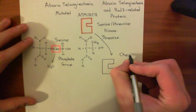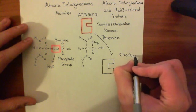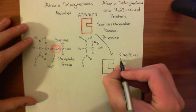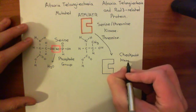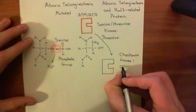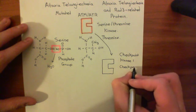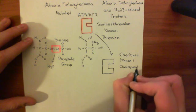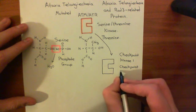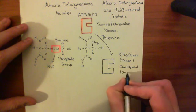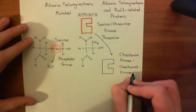There is checkpoint kinase 1 and checkpoint kinase 2. Because checkpoint kinase is a bit of a mouthful, people often just denote these CHK for checkpoint and then K for kinase, so CHK1 and CHK2 they are often denoted as.